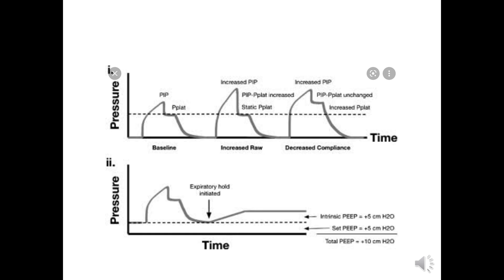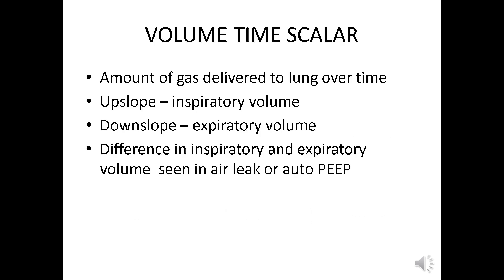In this graph the baseline PEEP is set, and at the end of expiration we perform an end expiratory hold. After the hold we determine the intrinsic or auto-PEEP developed within the lungs, shown here as 5. So the patient has a total PEEP of 10.